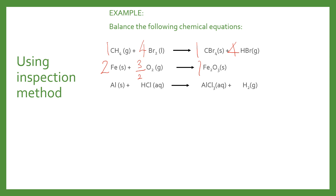Now we move to the third example. Aluminum chloride is the species with the most complicated chemical formula. So we put one in front of aluminum chloride, giving us one aluminum and three chlorine. To balance aluminum, we put one in front of aluminum — one on the reactant side and one on the product side. We also put three in front of HCl to match the three chlorine on the product side. This gives us three hydrogen, so we multiply H2 by 3/2 to balance the hydrogen.